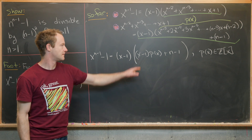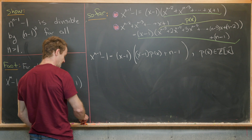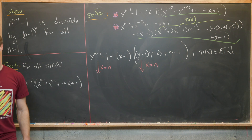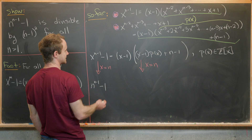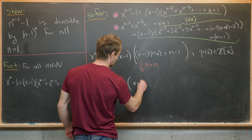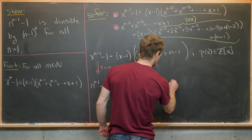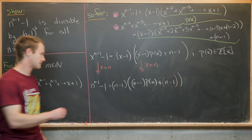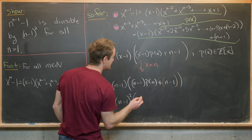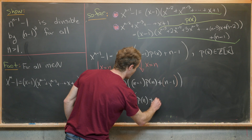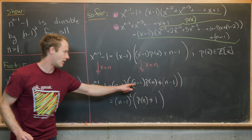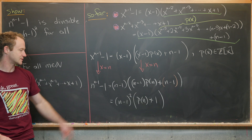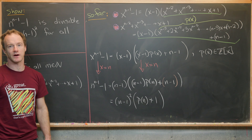Now we evaluate at x equals n. Setting x equal to n gives us n to the n minus 1 minus 1 equals n minus 1 times the quantity n minus 1 times p of n plus 1. Factoring out n minus 1 from the second factor, we get n minus 1 squared times p of n plus 1. This finishes our goal of showing that n to the n minus 1 minus 1 is divisible by n minus 1 squared.